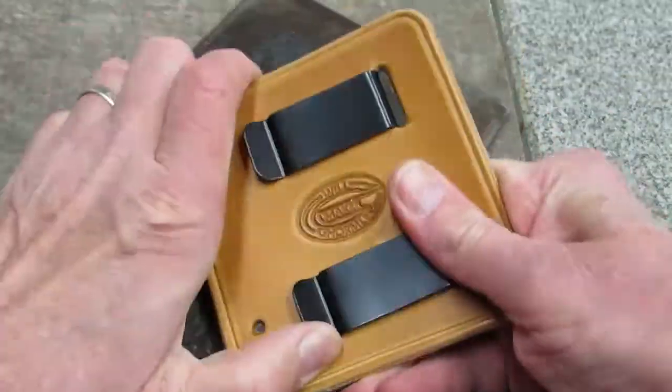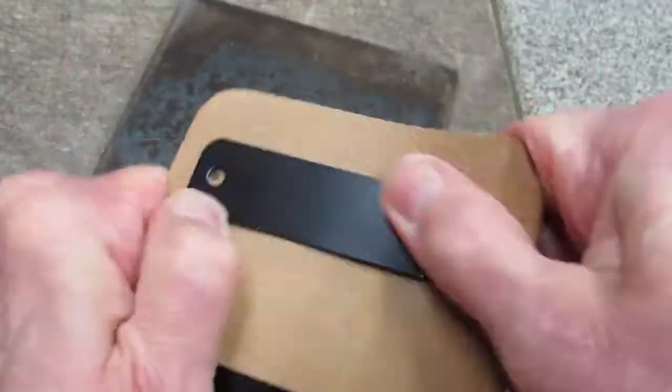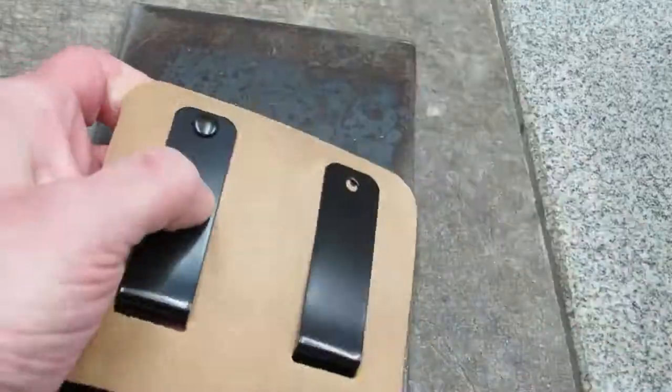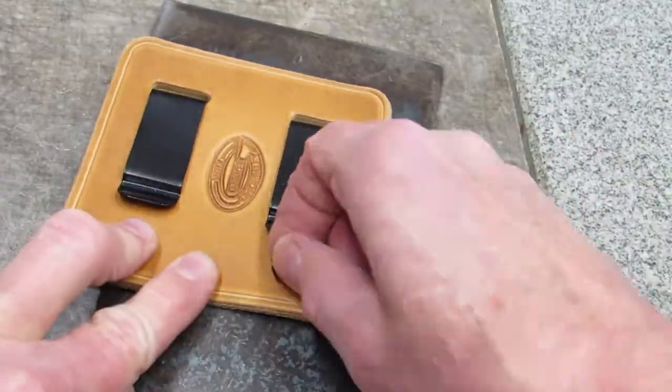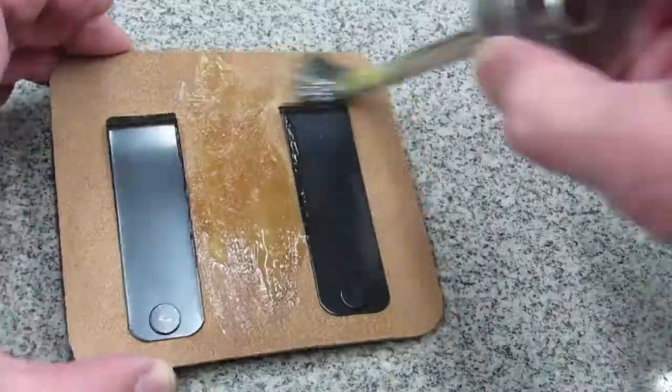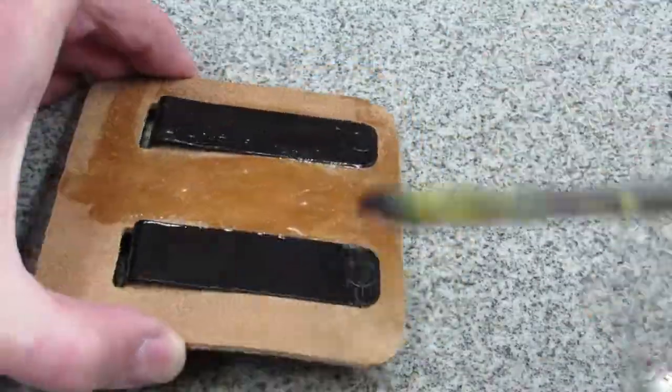Then apply contact cement to the back of the clip mounting panel and the backs of the clips. Allow contact cement to cure before further assembly.